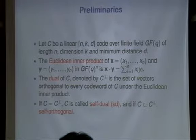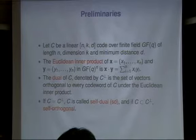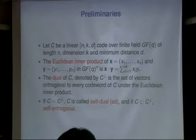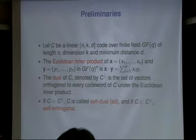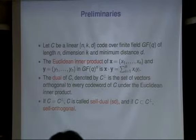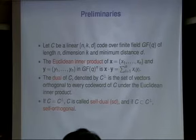The Euclidean inner product is the usual dot product of two vectors. The dual code is the set of vectors orthogonal to every codeword of the given code. In the binary case or in the finite field case, it is possible to have C equals C-perp — which is not possible over complex numbers. If C equals its dual, then C is called self-dual. If C is contained in its dual, C is called self-orthogonal.